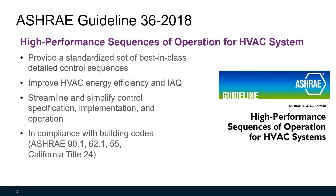ASHRAE Guideline 36 is High-Performance Sequences of Operations for HVAC Systems, published in 2018. It provides a standardized set of best-in-class detailed control sequences. The goal of this guideline is to improve HVAC energy efficiency and indoor air quality, and to streamline and simplify control specification, implementation, and operation.